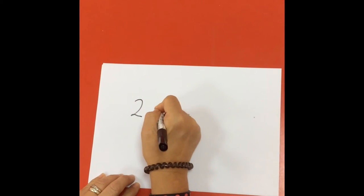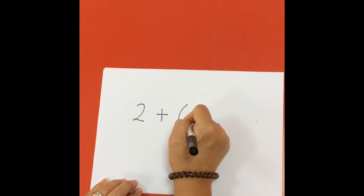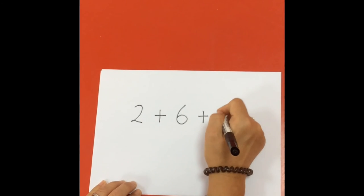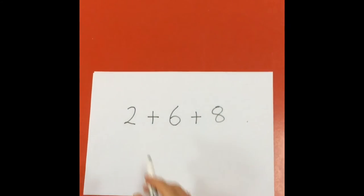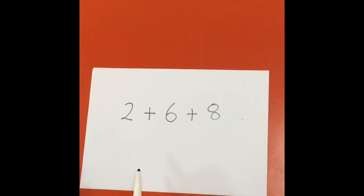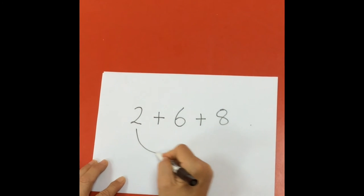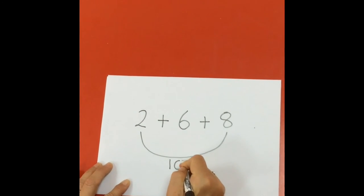For example, two add six add eight. And they again should recognize the number bonds to ten. In this case, the two and the eight make the ten.